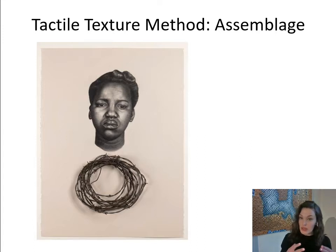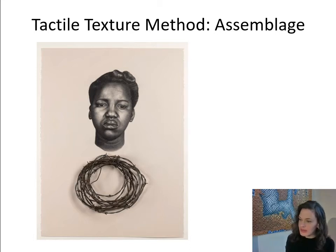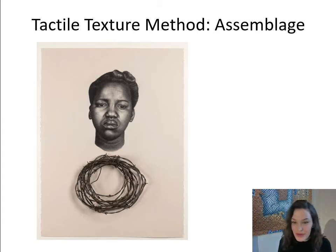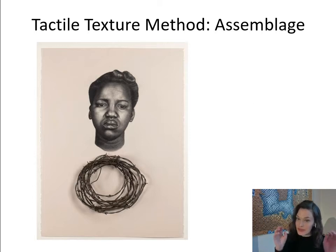He would add a sculptural element related to that person's life from his research. For example, if they had ended up in the military later in their lives, he would include a globe and military paraphernalia. If they had been a mother, he might include things that went along with motherhood at that time period. So it would be a two-dimensional drawing alongside a sculpture made out of found objects — not something he sculpted, but something he found to place next to the drawing or painting on the wood to accompany it.